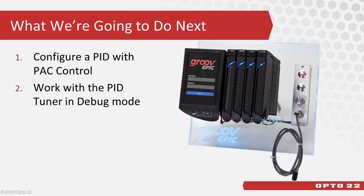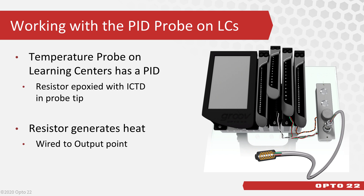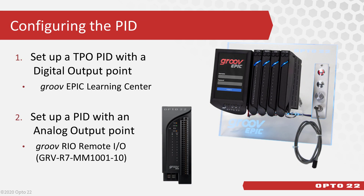Armed with this knowledge, we're going to use it as we work with PIDs. First, we're going to configure a PID with PAC Control. Then we'll work with the built-in PID tuner in debug mode. The PID that you're going to set up will control a desired temperature. The ICTD temperature probe included with the Learning Center has a resistor epoxied next to it in the probe tip, and that resistor is wired to an output point so that the PID can control the heat that it generates.